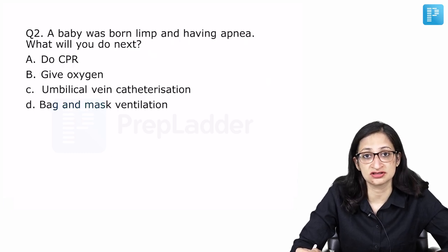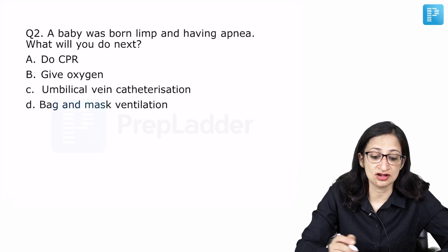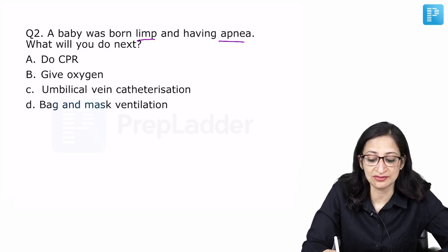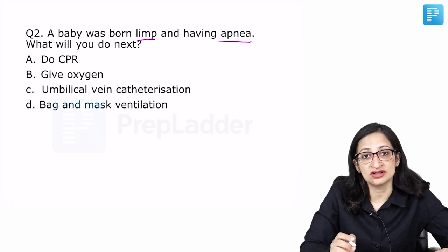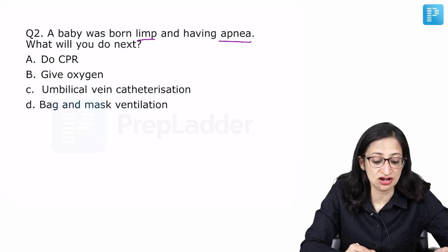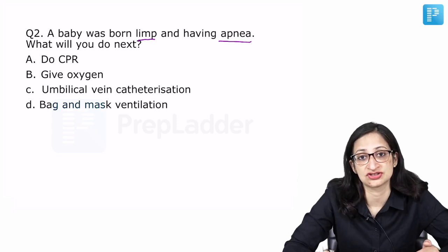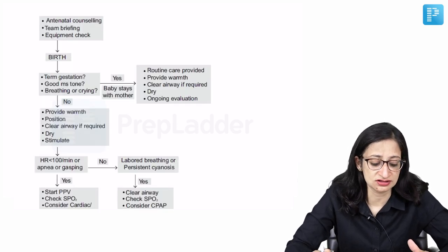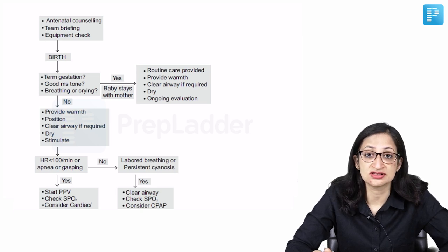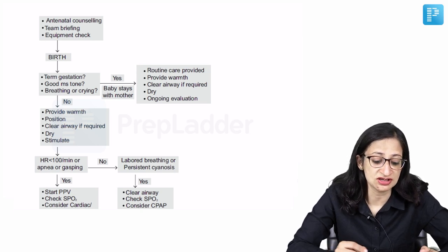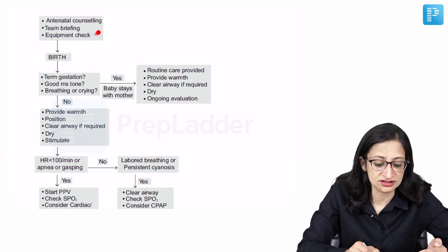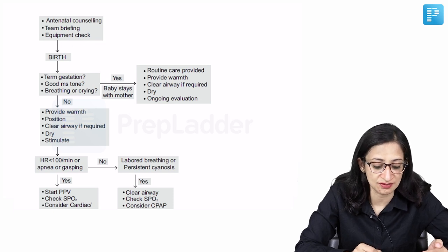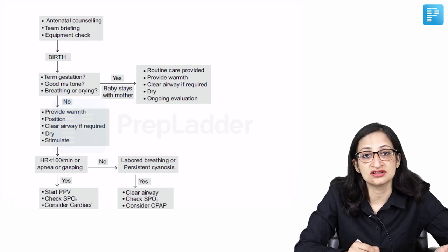Moving to the next question, this was a question on neonatal resuscitation. Again a very basic one, a baby was born limp and having apnea. Apnea means the baby is not breathing. What will you do next? During neonatal resuscitation for this baby, are you going to start CPR or give oxygen or umbilical vein catheterization or bag and mask ventilation? I am sure you would have answered it correctly. In the latest neonatal resuscitation algorithm, we begin by checking antenatal counseling, team briefing and equipment check. We do all these antenatal counseling, team briefing, equipment check and then the baby is born.